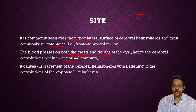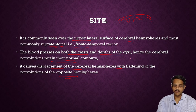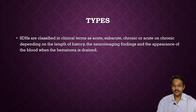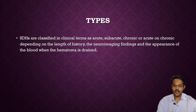Subdural hemorrhage causes displacement of cerebral hemispheres with flattening of the convolutions of the opposite hemisphere — the same side may not show flattening, but the opposite side may, due to pressure. Types of subdural hemorrhage are classified based on onset: acute, sub-acute, and chronic, based on length of history, neuropathological findings, and appearance of blood within the hematoma.